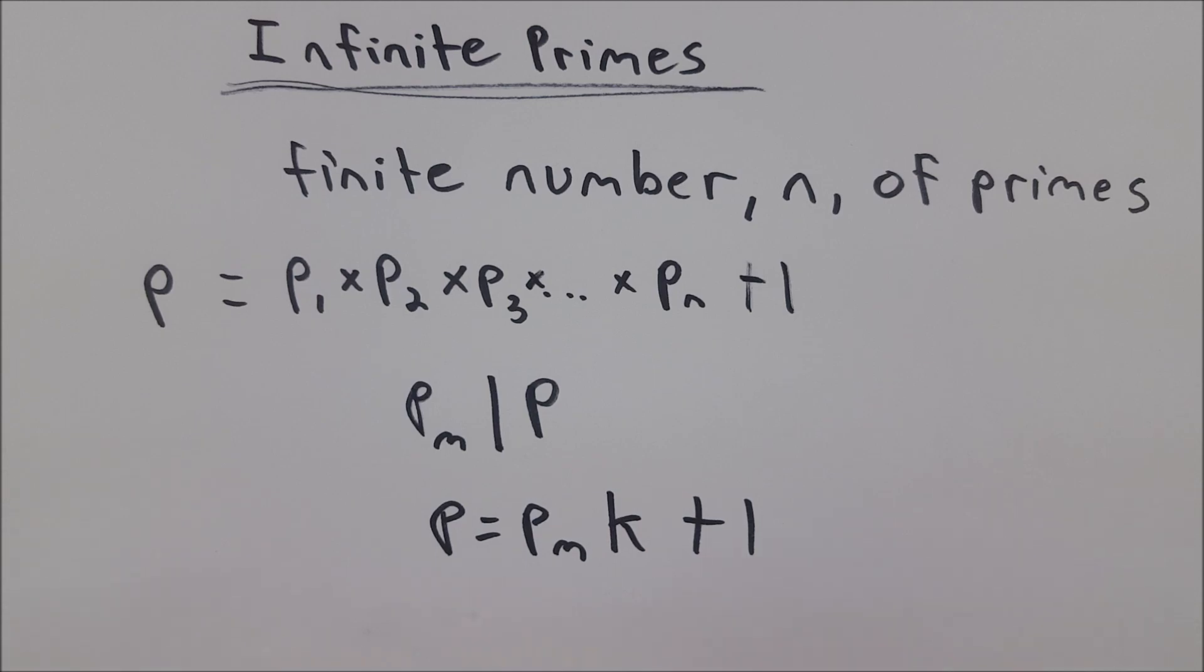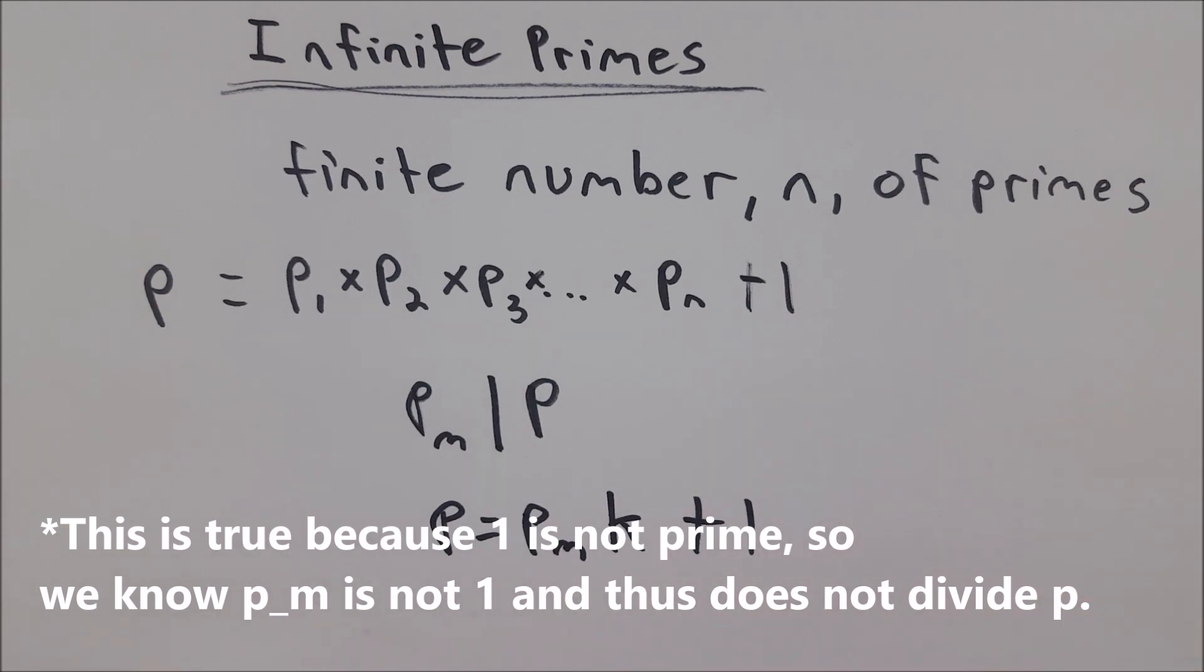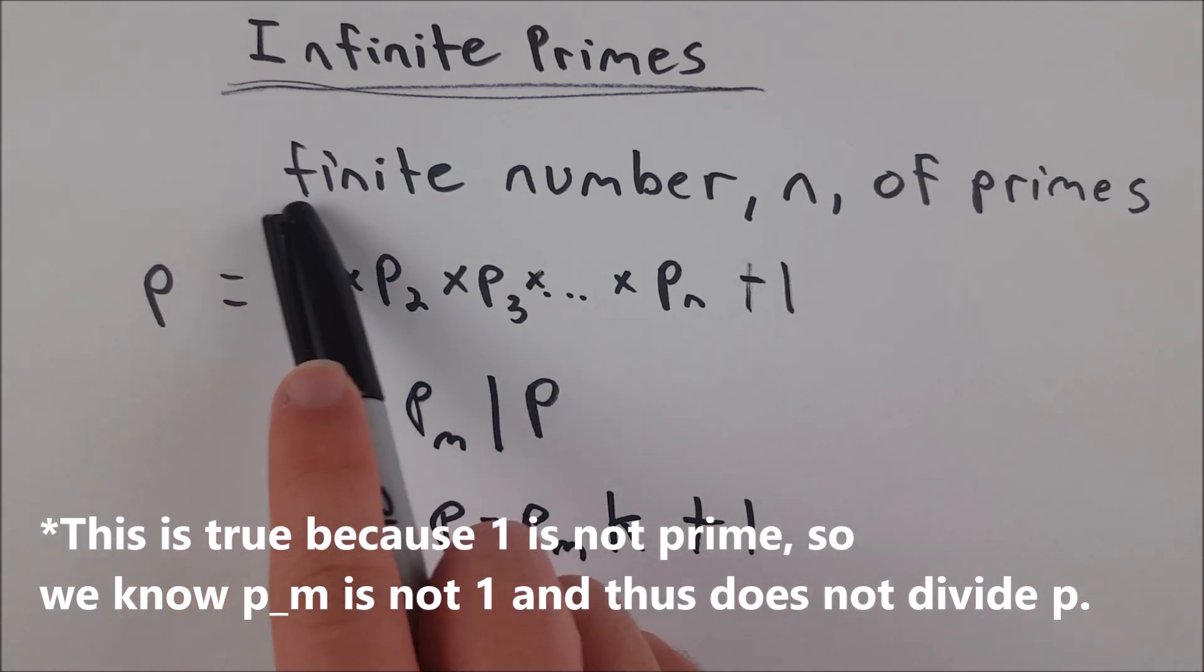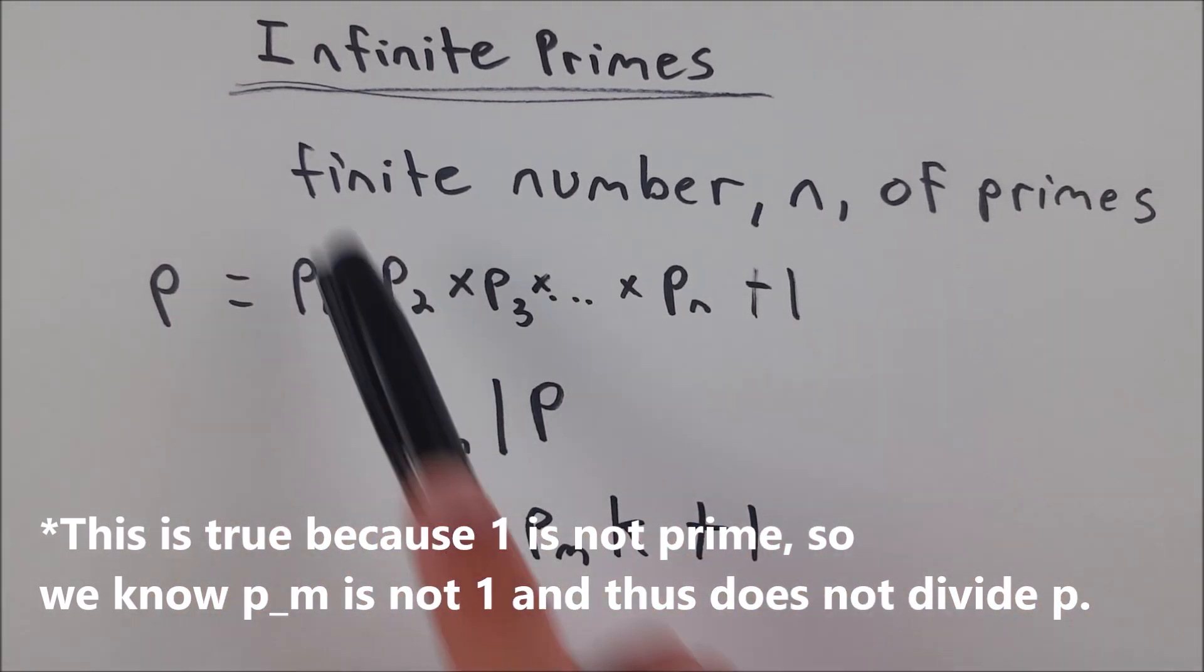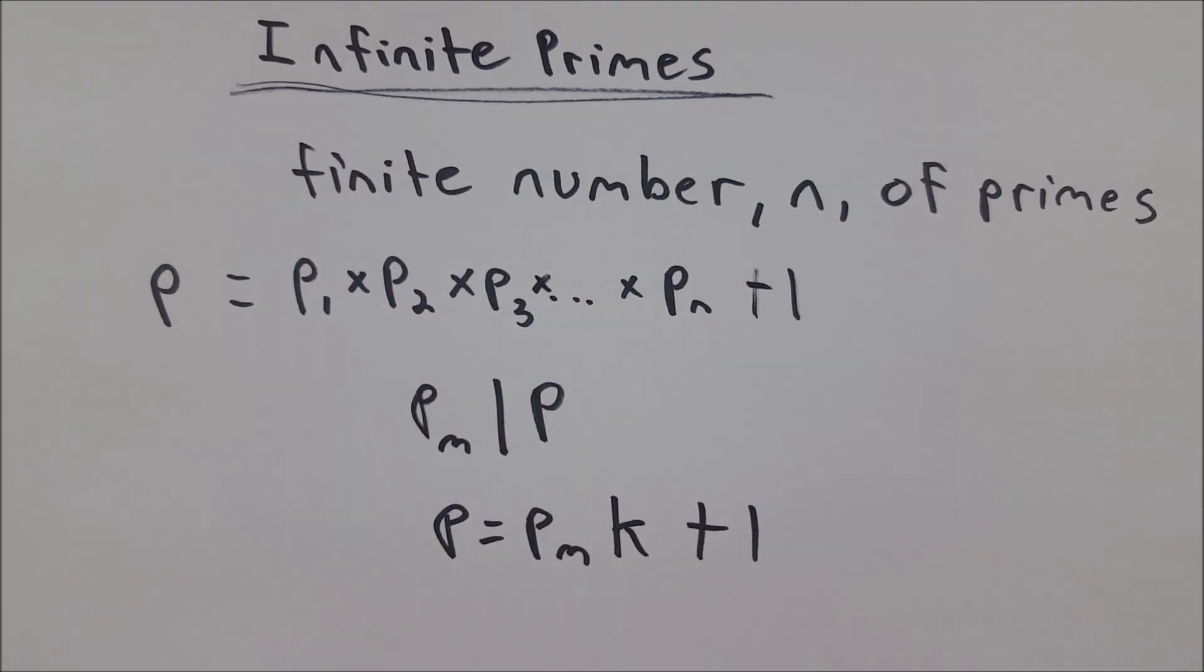And that's a contradiction, because we have both p sub m divides P, and P is one greater than a multiple of p sub m, which means that p sub m does not divide P. That's our contradiction, which lets us know that our initial assumption has to be false, and therefore the opposite is true. And that's how you prove that there's an infinite number of primes.